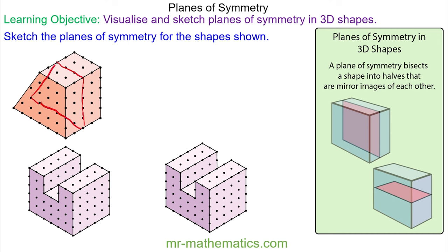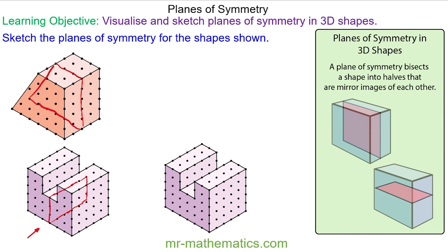On the next shape, you can see the front face in this direction has one line of symmetry here, and this can be used to draw the plane of symmetry here. The final plane of symmetry can be identified using the side and the plan view, and these will come together to make the second plane of symmetry.